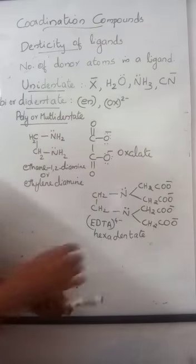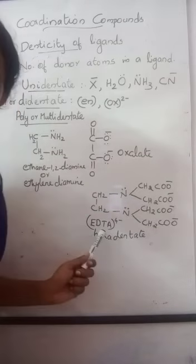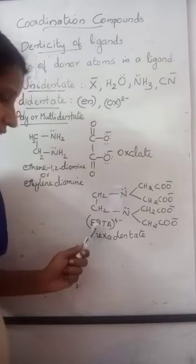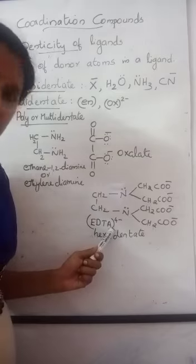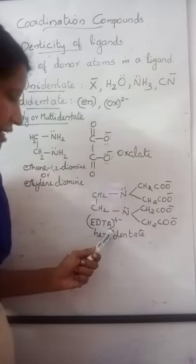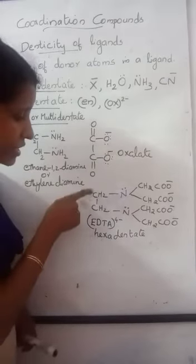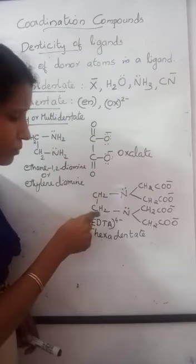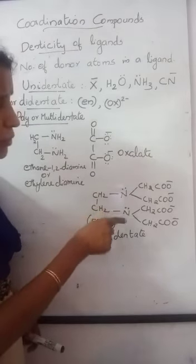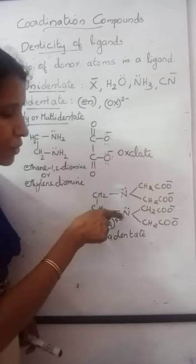An example of hexadentate ligand is EDTA, ethylenediamine tetraacetate. Here, the molecule is ethylene, CH2 double bond CH2. In ethylene, the double bond breaks and two amino groups are attached. And in the amino groups...